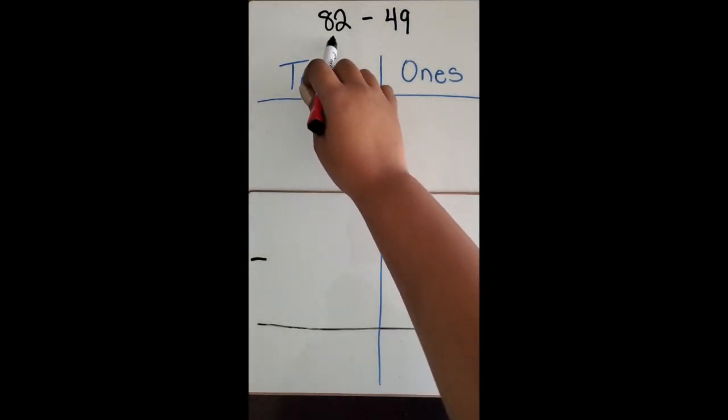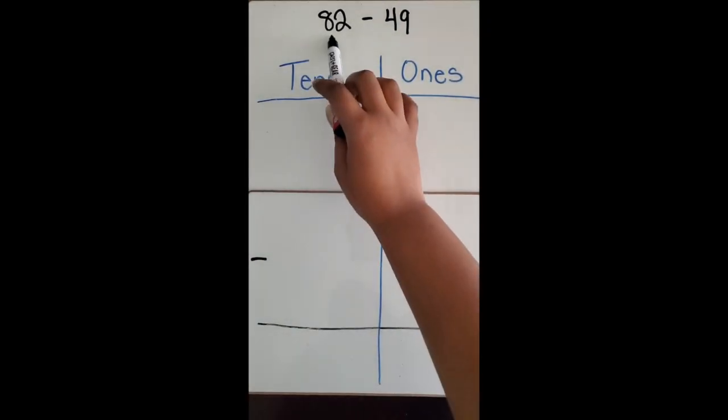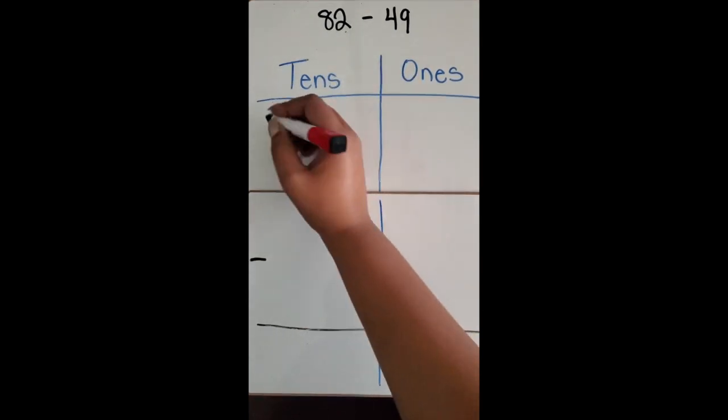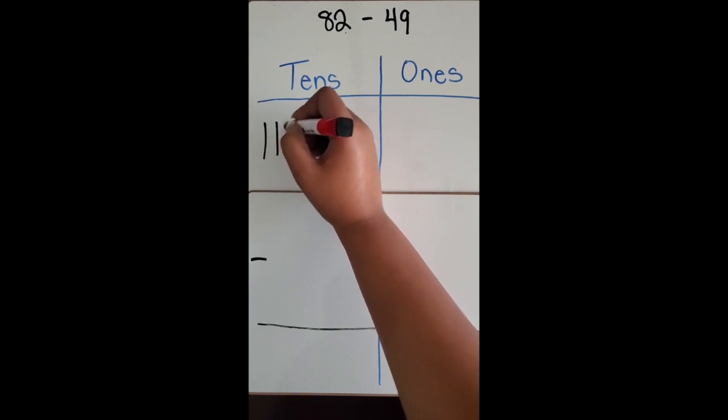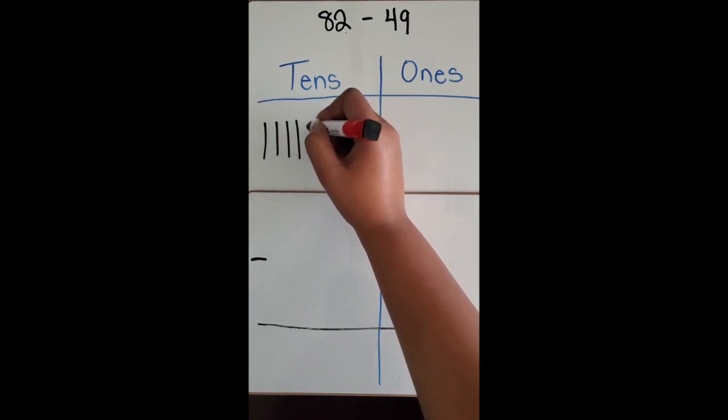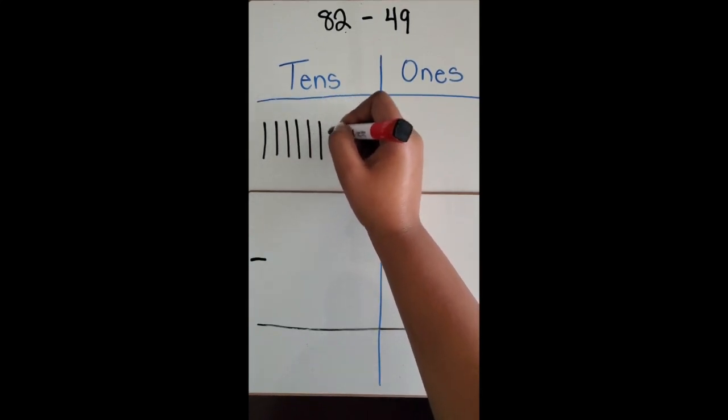So I'm going to start by drawing 82. 82 has eight tens and two ones. I'm going to draw eight tens. I'm just going to draw tally marks to represent the tens. It's very quick: four, five, six, seven, eight.